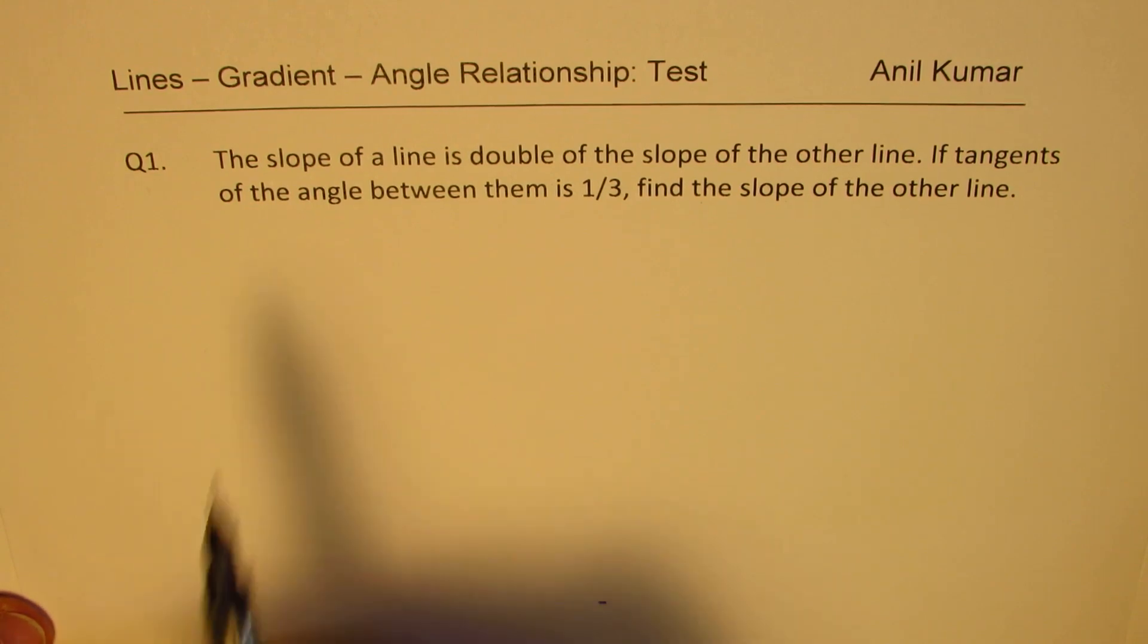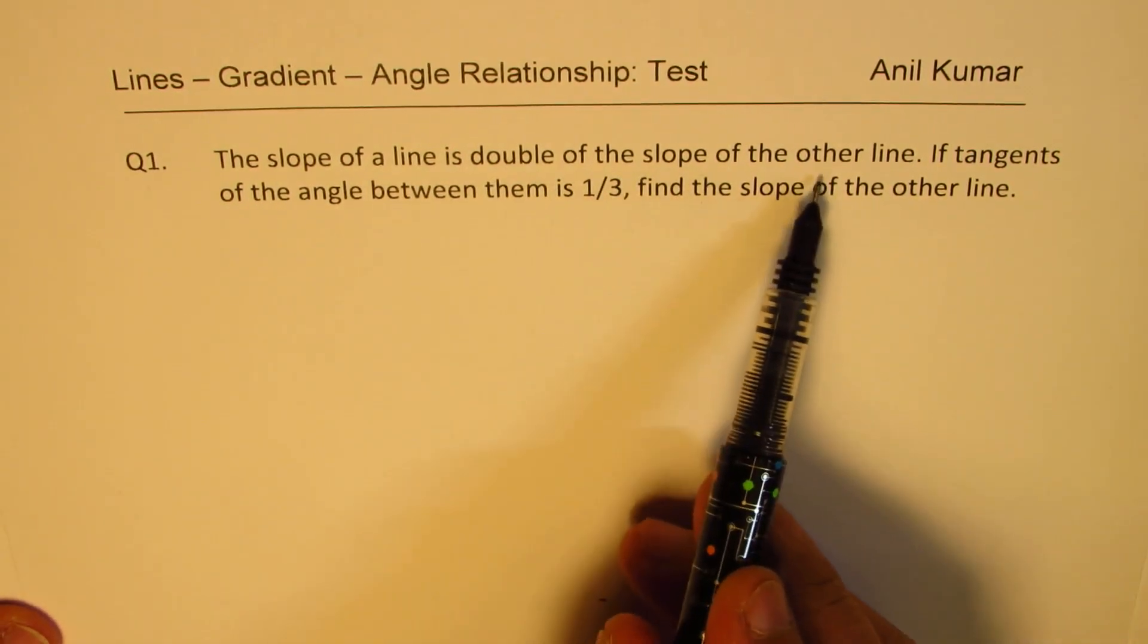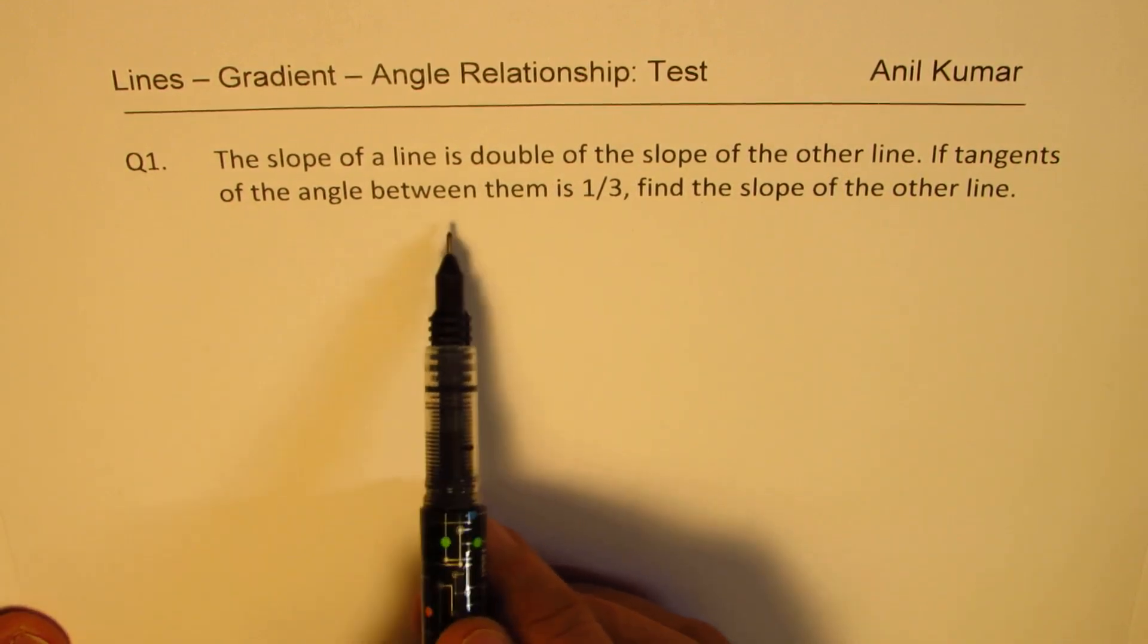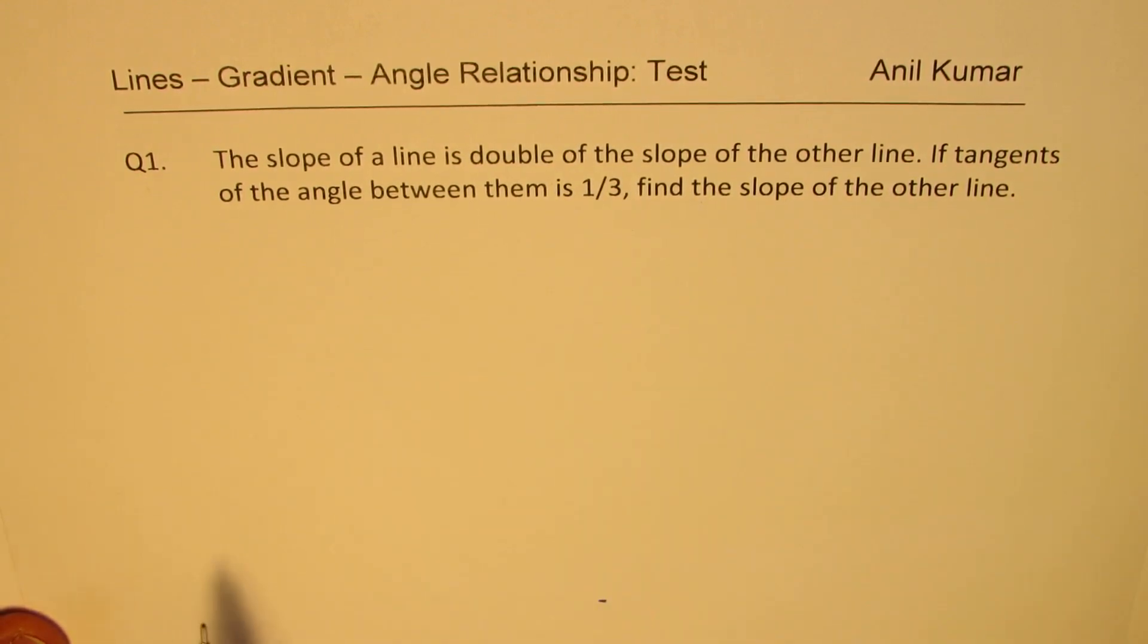Question number one over here is: the slope of a line is double of the slope of other line. If tangents of angle between them is 1 over 3, find the slope of other line.